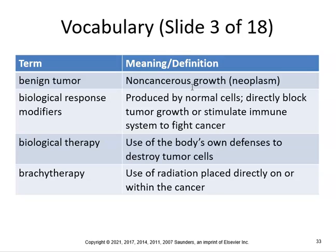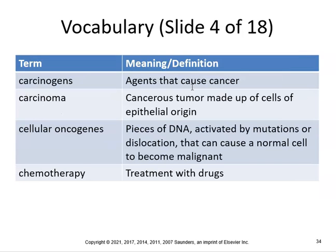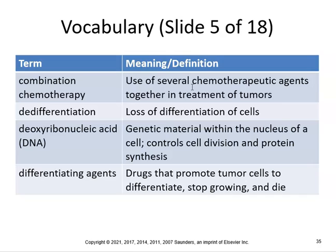Benign tumors are non-cancerous growths — know the difference between benign and malignant. Biological response modifiers are produced by normal cells and directly block tumor growth or stimulate the immune system to fight cancer. Biological therapy uses the body's own defenses to destroy tumor cells. Brachytherapy uses radiation placed directly on or within cancer. Carcinogens are agents that cause cancer. Carcinoma is a cancerous tumor made up of cells of epithelial origin. Combination chemotherapy uses several agents together.